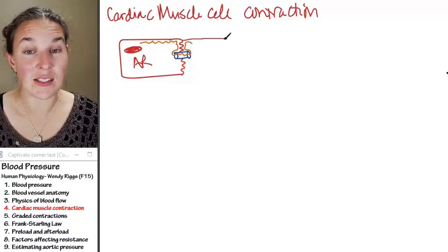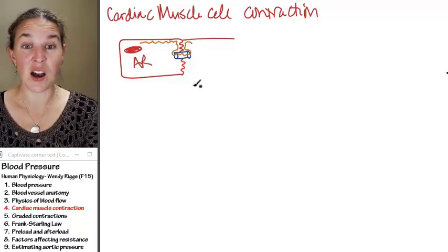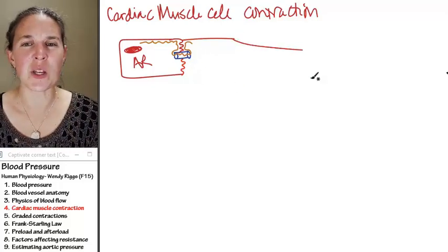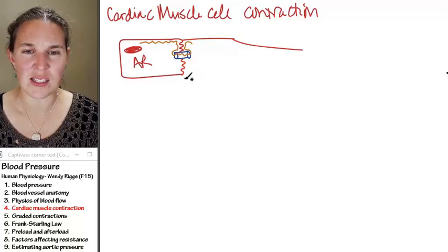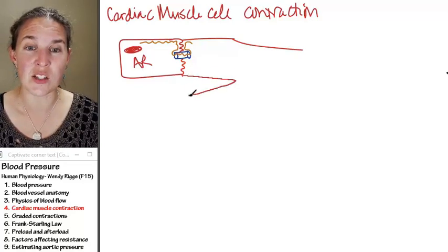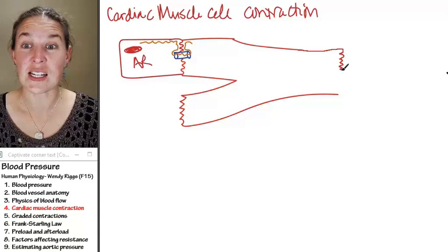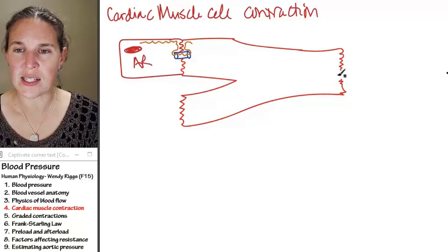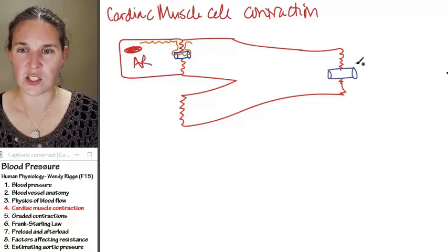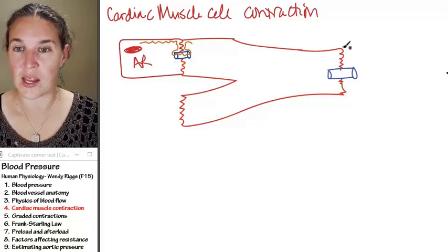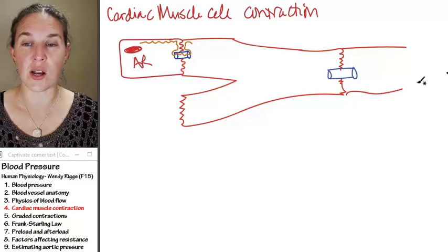Contractile cells are just connected to the auto-rhythmic cells through these intercalated discs. Contractile cells are actually branching cells, so we could have another one attached to something else down here. We're going to attach it to someone else, and that's just a giant intercalated disc where we're then attaching to another cardiac muscle cell and so on and so forth.